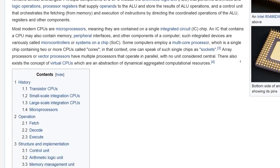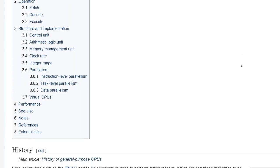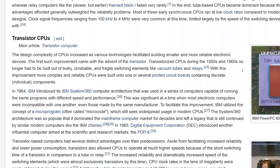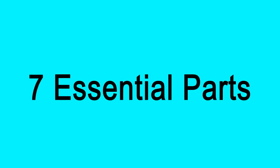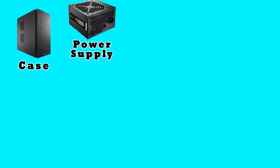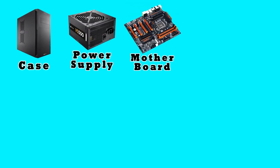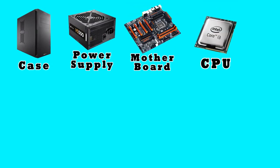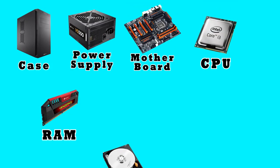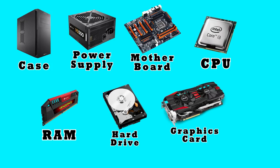While each one of these components is complex enough to spend a lifetime learning about, I'm going to give a very broad and general overview. A typical desktop computer comes down to these seven essential parts: case, power supply, motherboard, CPU, RAM, hard drive, and graphics card. These are the fundamental parts of any desktop computer.